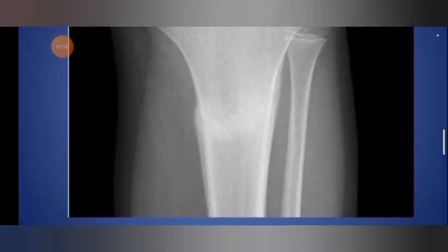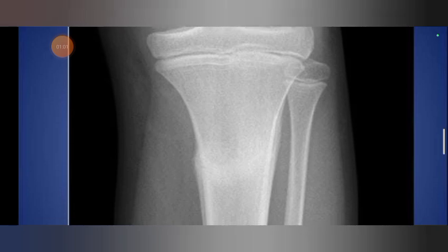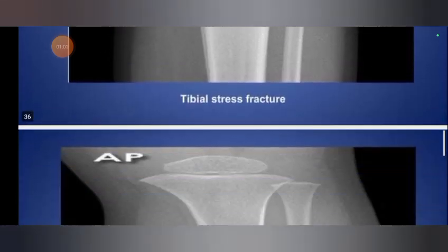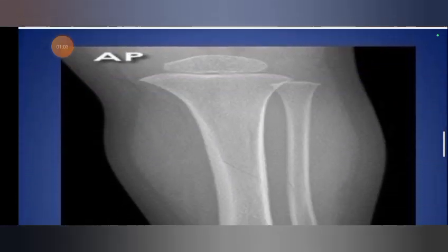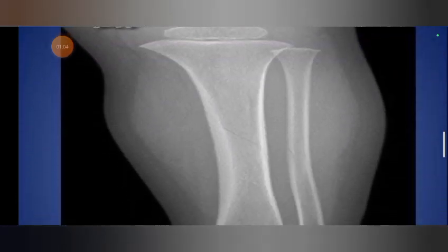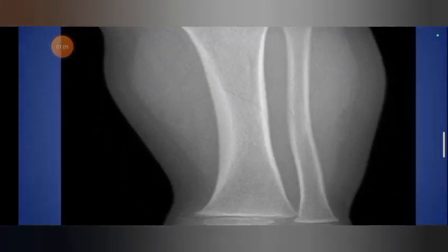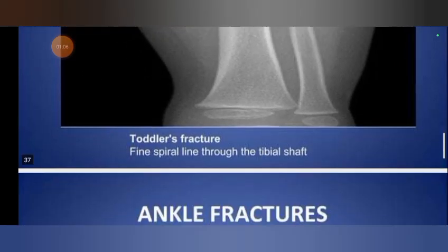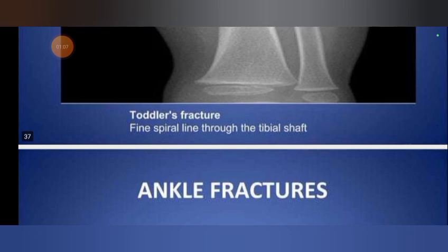This is the tibial stress fracture, shown in AP view. Next is the toddler fracture — a spiral line through the tibial shaft.